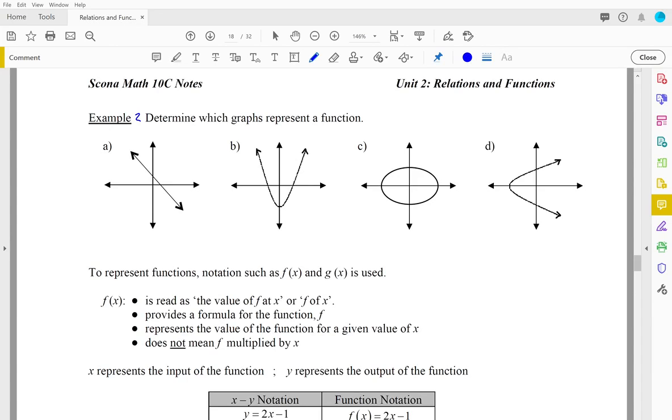We're going to determine which graphs represent a function, and we can use our vertical line test that we've learned. If we can draw a vertical line anywhere on the graph, and it can only ever possibly hit in one spot, so any vertical line that I draw on this graph will only hit in one spot, then that qualifies as a function.